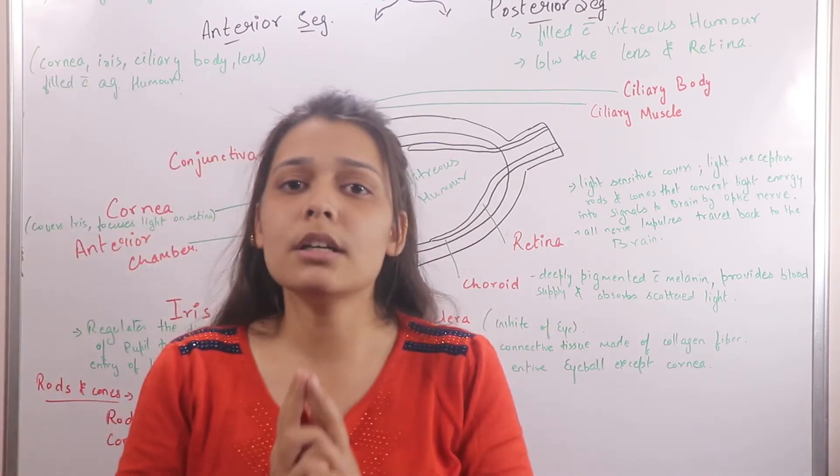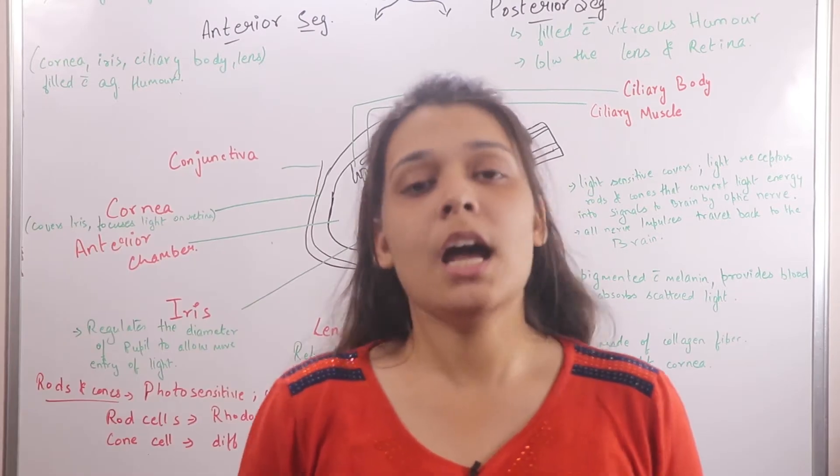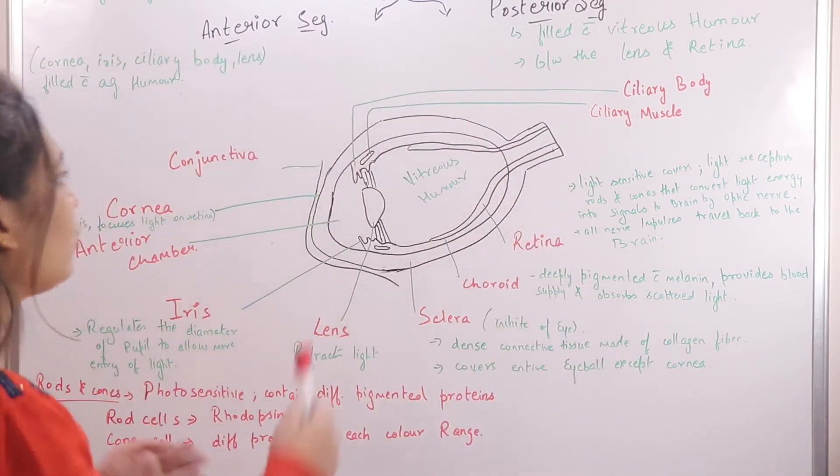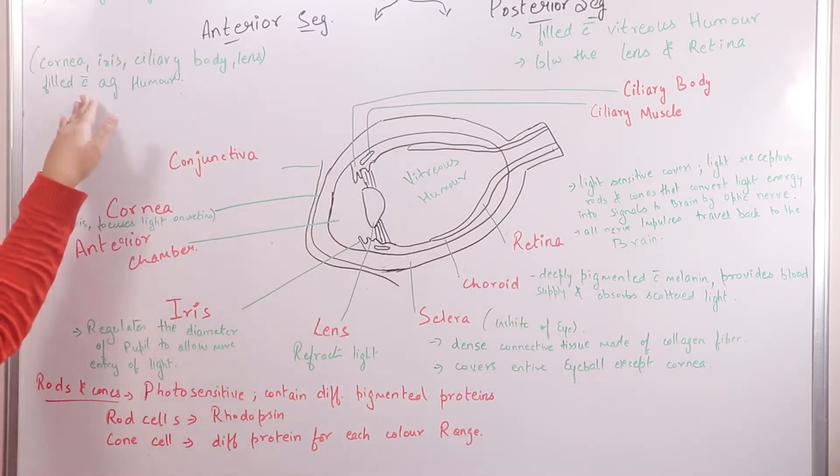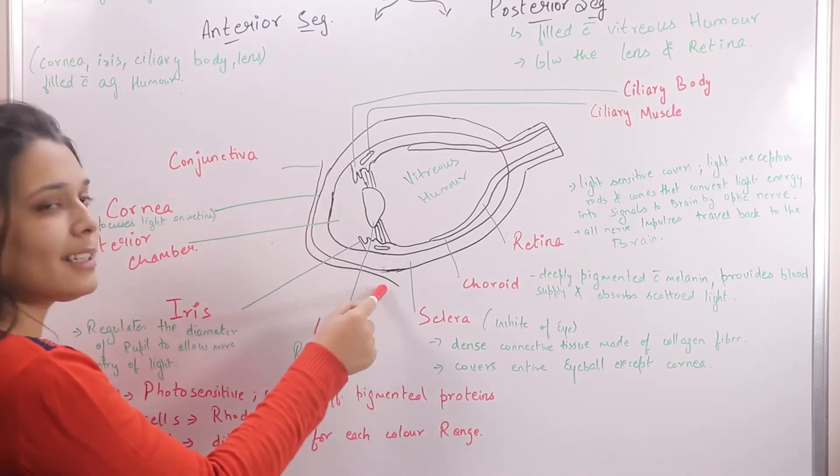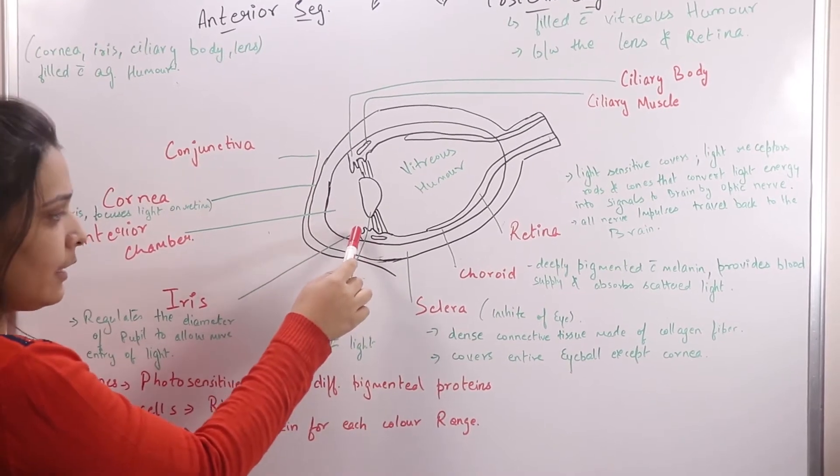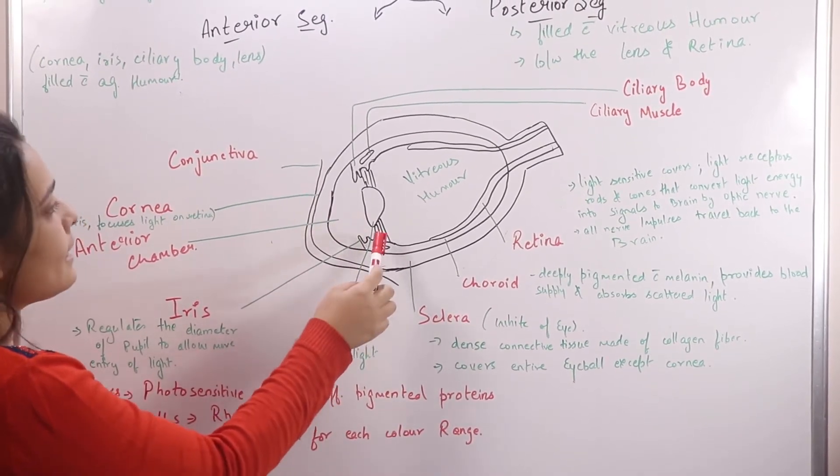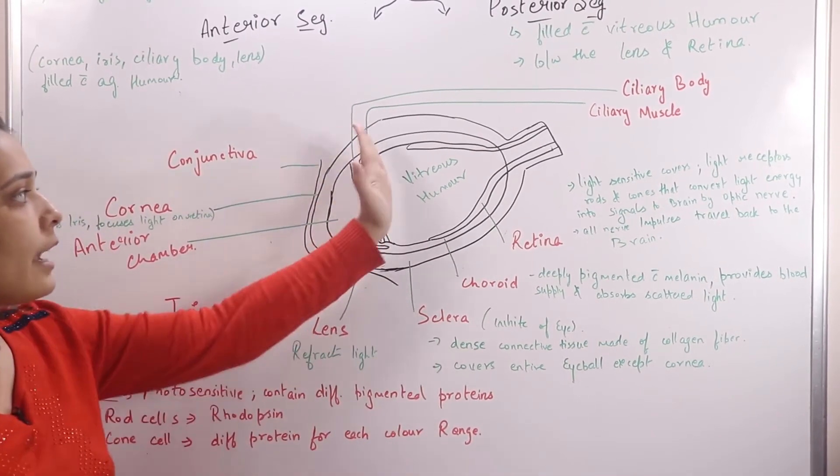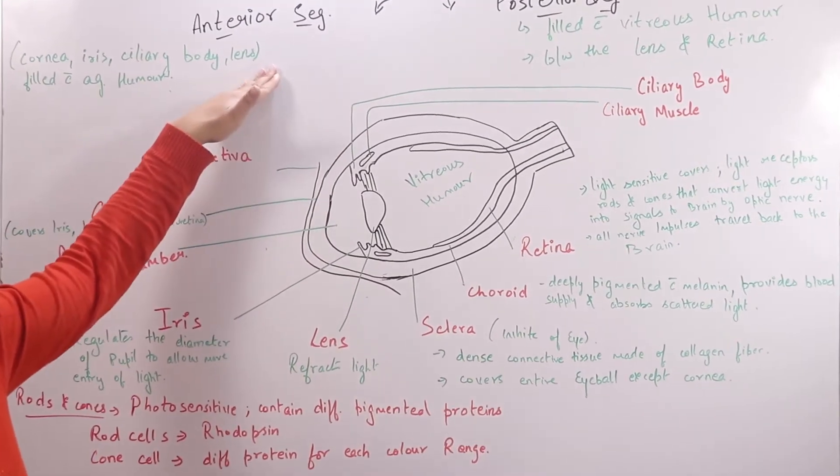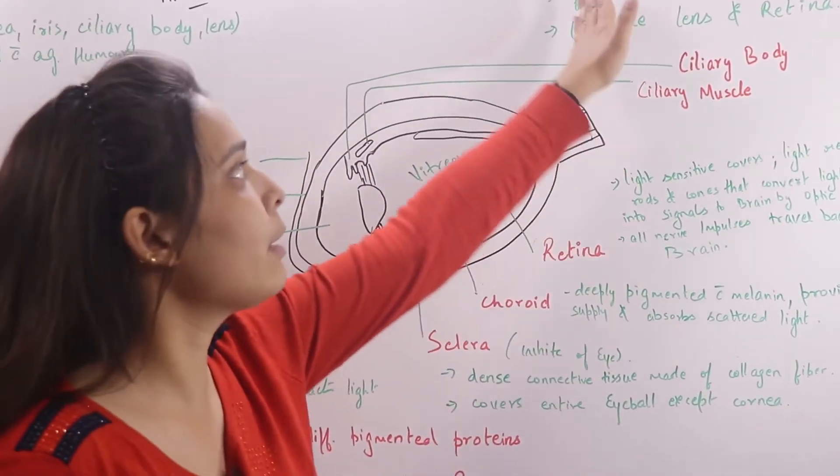Now we are going to study the structure of the human eye. First, the anterior segment: we have our cornea, this part, that is the foremost part. Then our iris, this part, and the lens and the ciliary bodies.